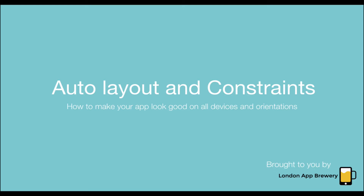Hi guys, Angela here from the London App Brewery. In the last episode we made our designs for our Dice App and we made it look beautiful, but we realized that there was a slight problem in that it didn't look very good when you turn the phone to horizontal or when you change the screen size. So people who have different screen sizes or different iPhones can't have the same appearance of the app. In this episode we're going to learn about auto layout and constraint setting in order to correct that. Let's get started.